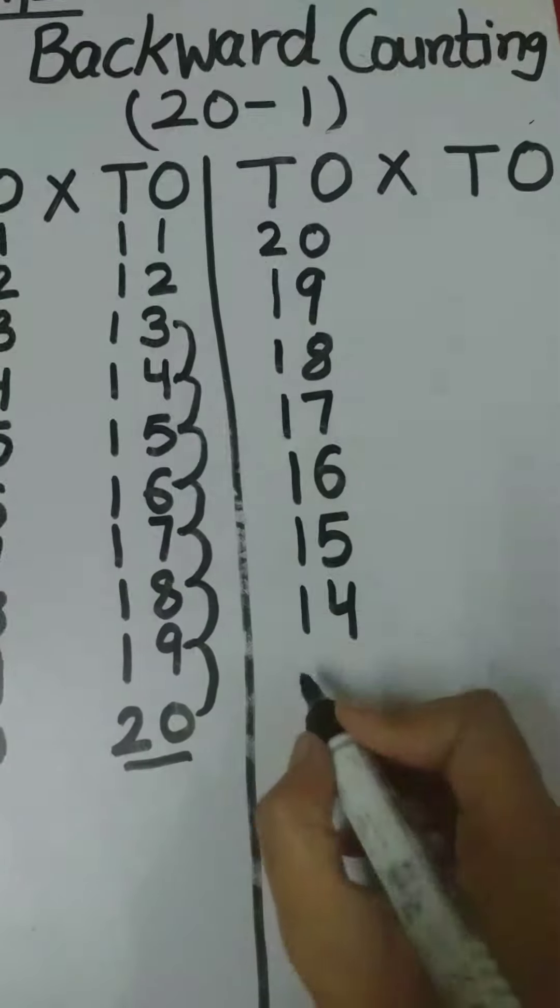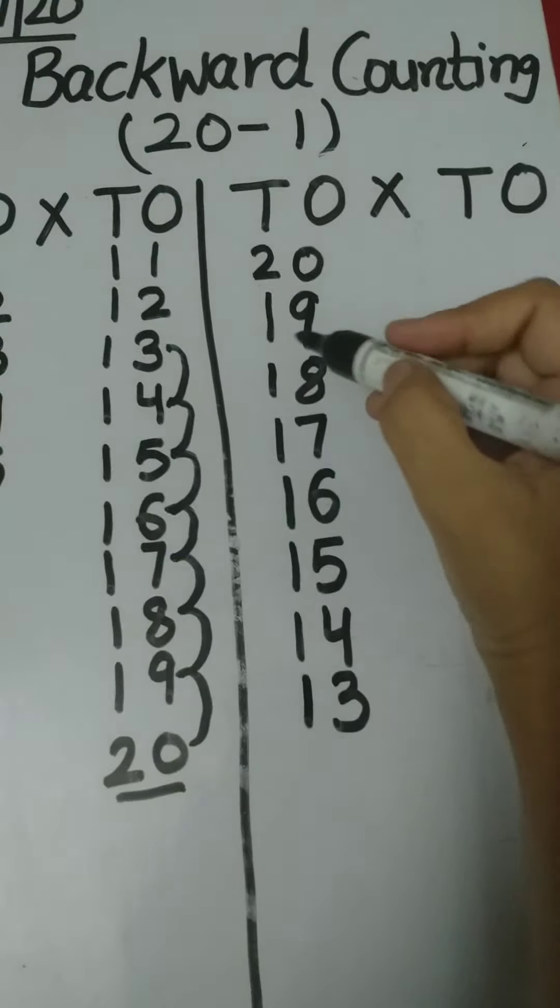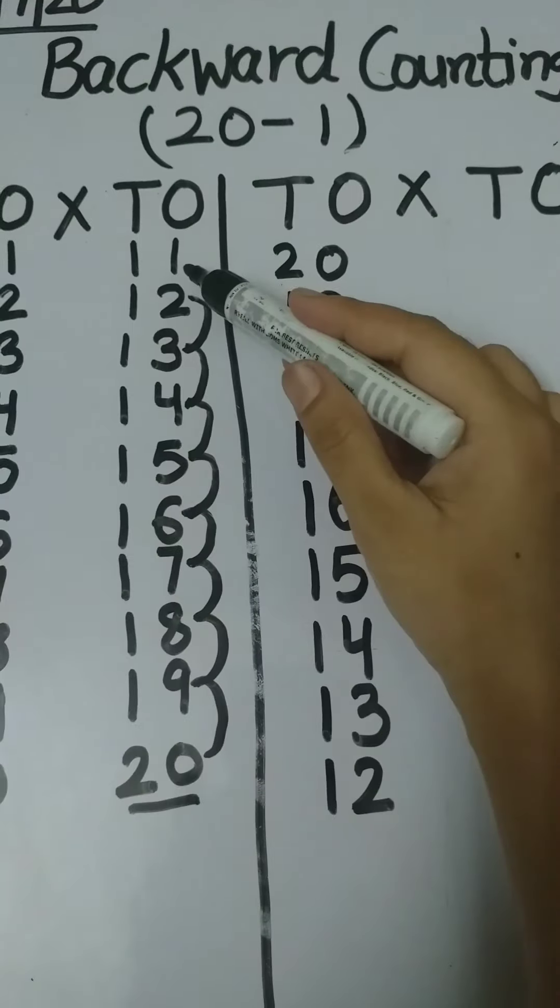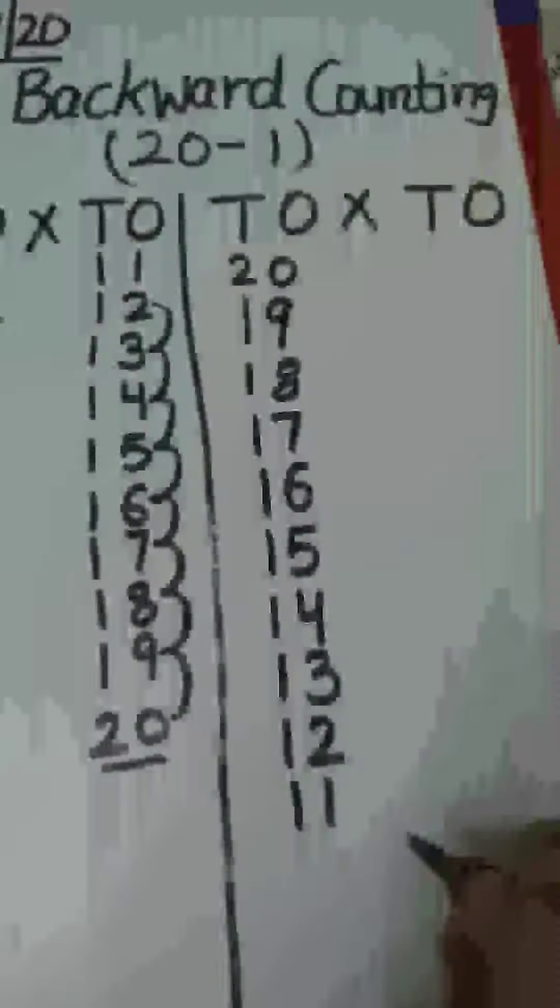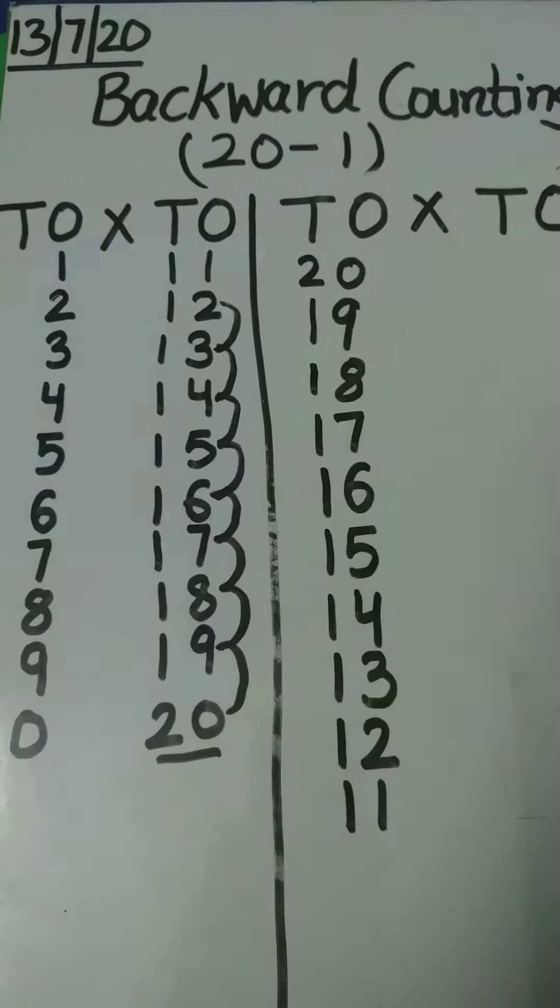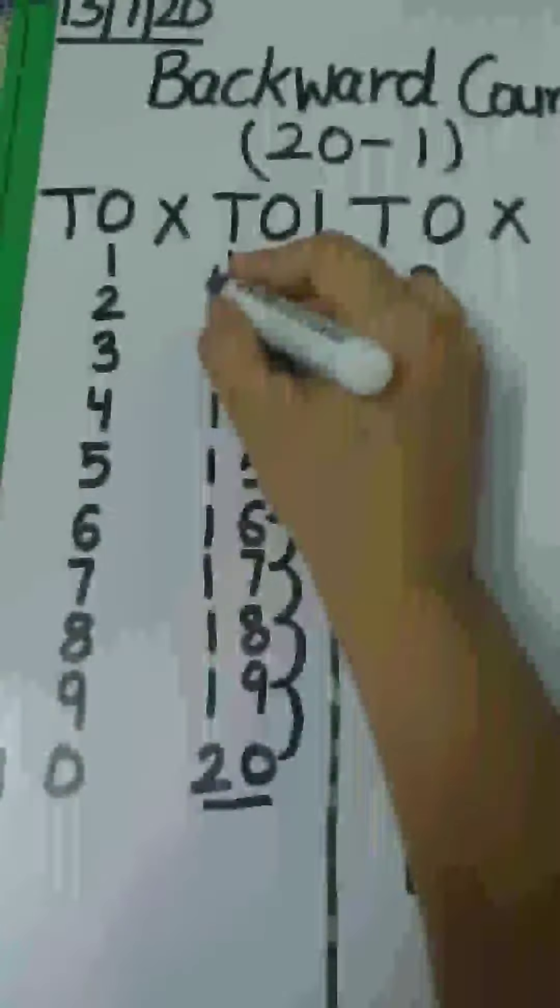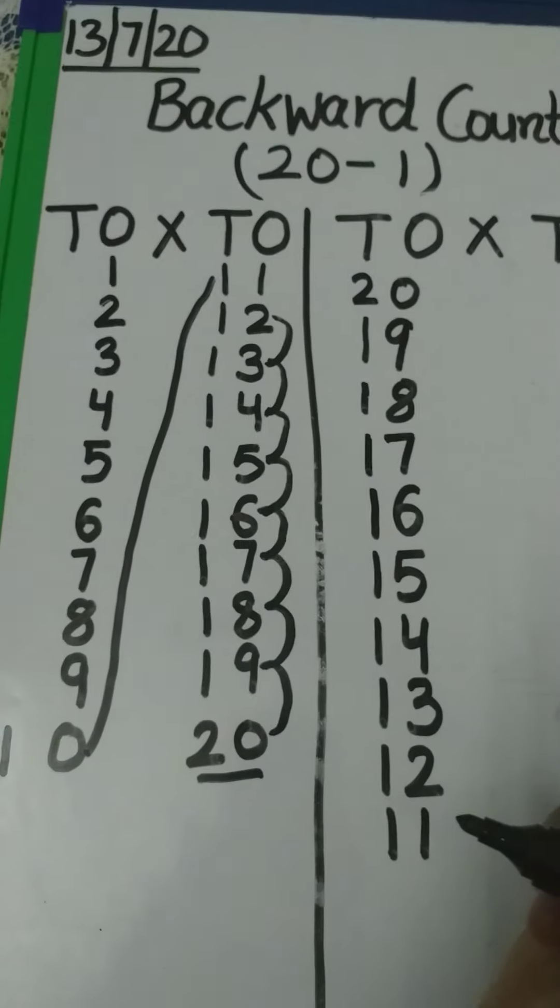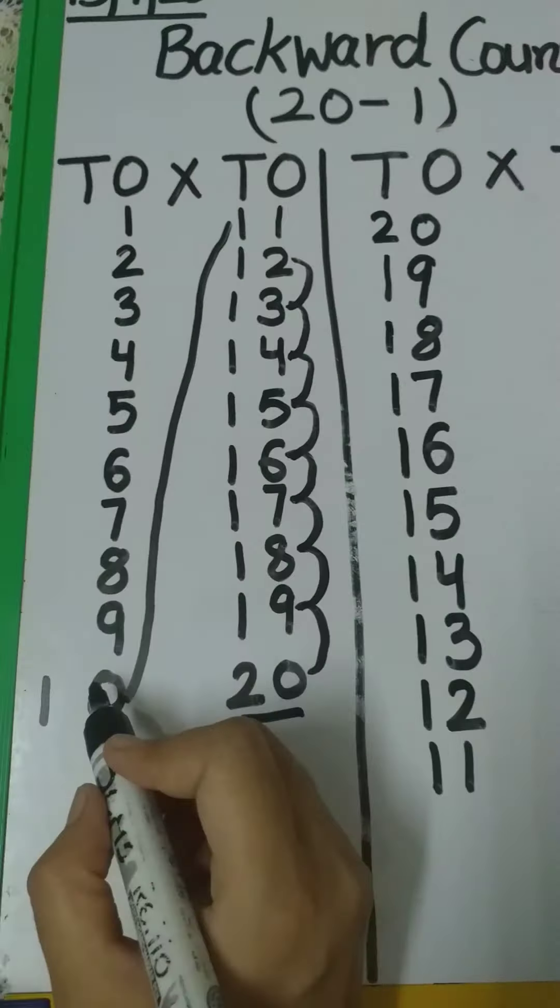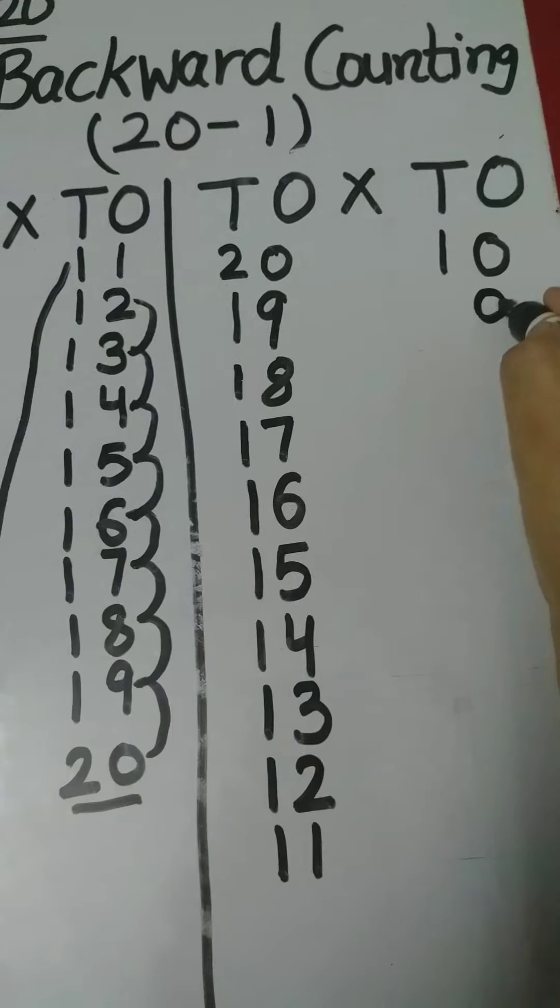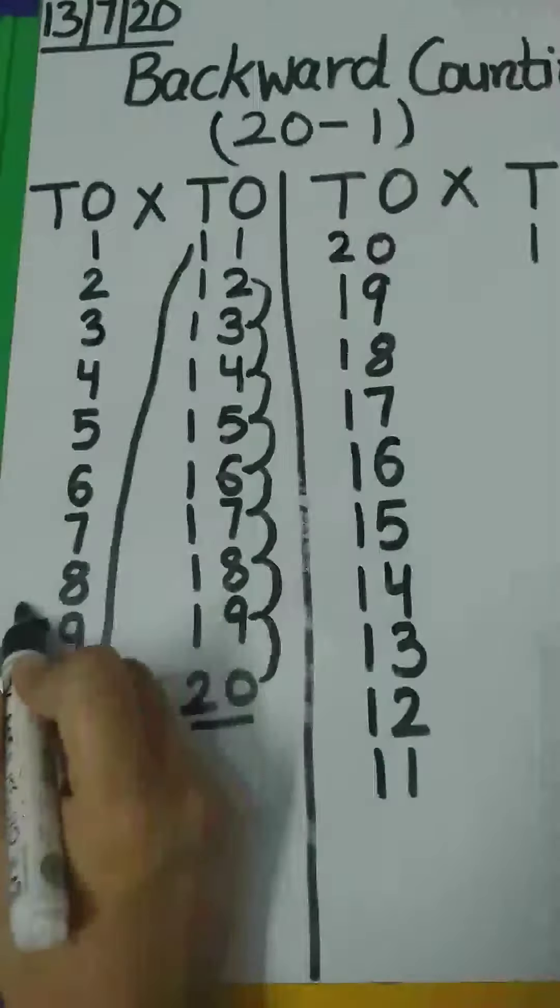Then 13. Next is 12, and what comes before 12 is 11. In next line, what comes before number 11? Yes, number 10. Then what comes before number 10 is 9. Then 8.